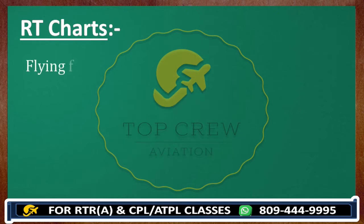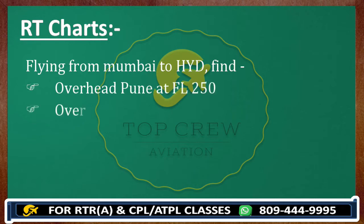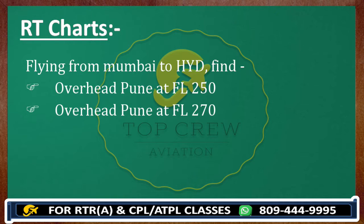Next I gave you Pune — overhead Pune at Flight Level 250. So you are flying from Mumbai to Hyderabad. What would be your ATC? We need to check both situations: at Flight Level 250 and Flight Level 270. Let's go ahead.